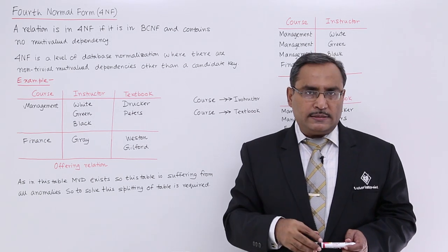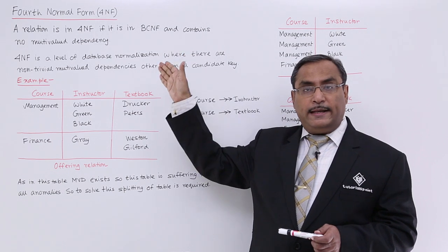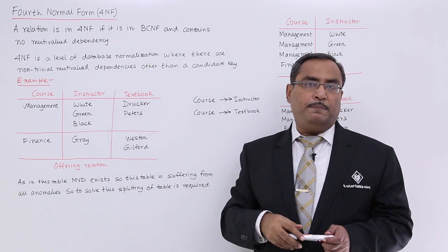Now at this particular 4NF, we are getting a term that is multivalued dependency. 4NF is a level of database normalization where there are non-trivial multivalued dependencies other than a candidate key.